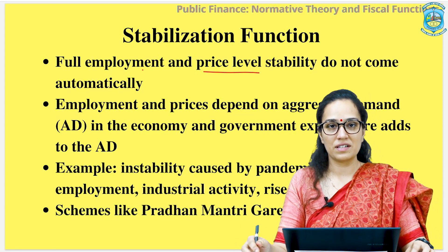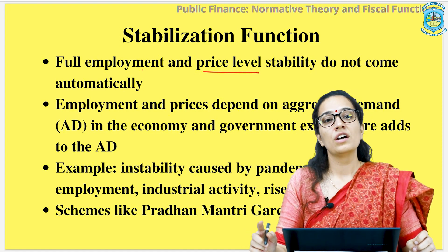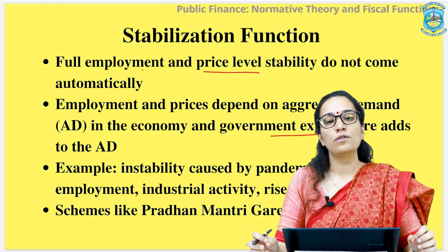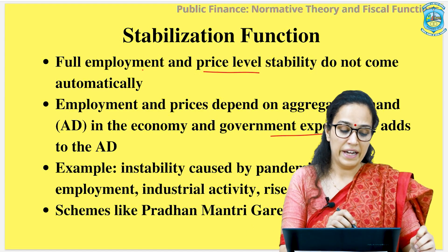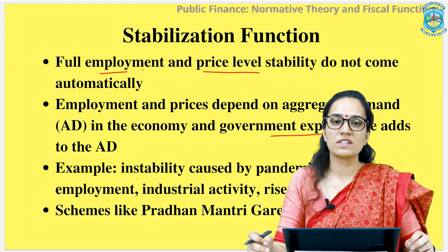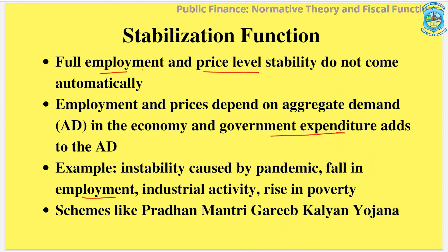Next comes the function of stabilization. Price stability, employment, and economic growth can't take place simultaneously without government intervention. Government through its fiscal instruments of government expenditure or taxation influences the aggregate demand in the economy, thus pushing ahead full employment, economic growth, and stabilizing prices. For example, during the recent pandemic there was a fall in employment, industrial activity, and a rise in poverty. As a consequence, the government launched the Pradhan Mantri Garib Kalyan Yojna, ensuring social economic welfare of the poorer lot so as to maintain productivity and boost economic growth.